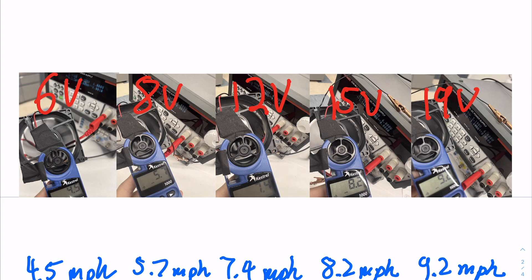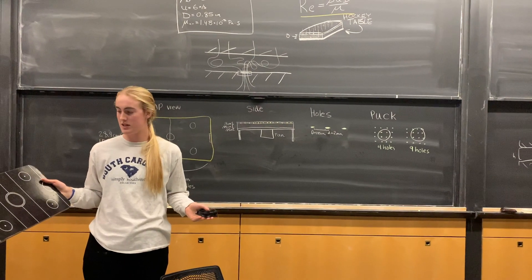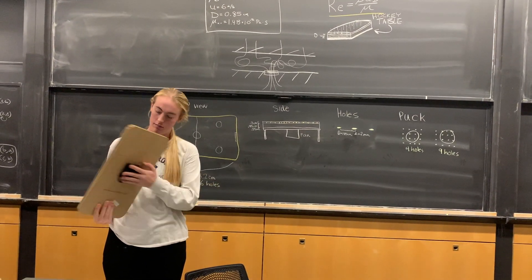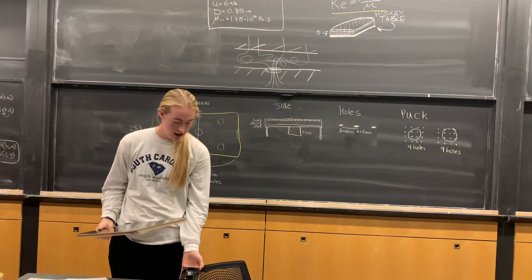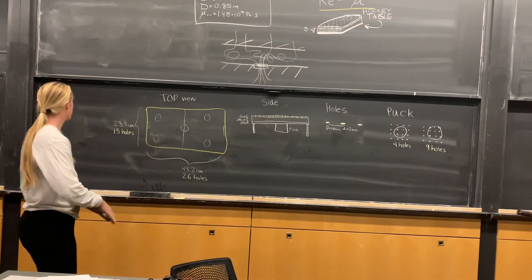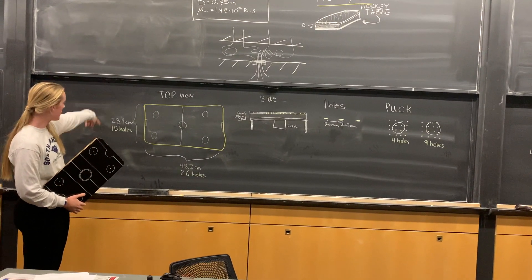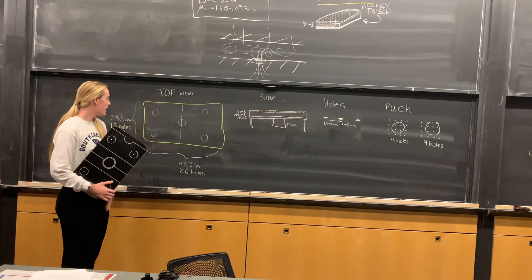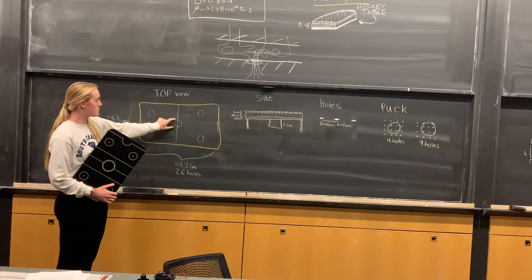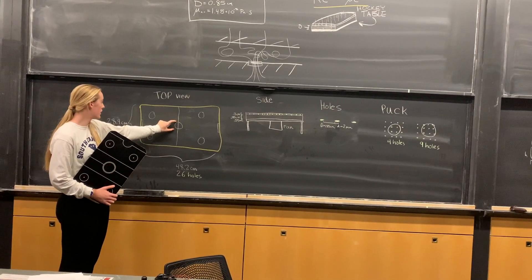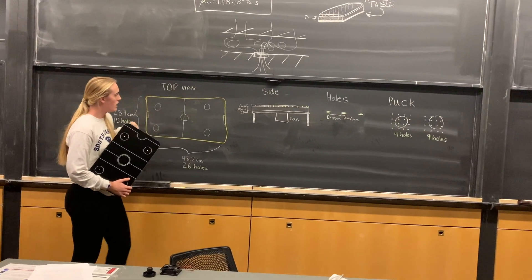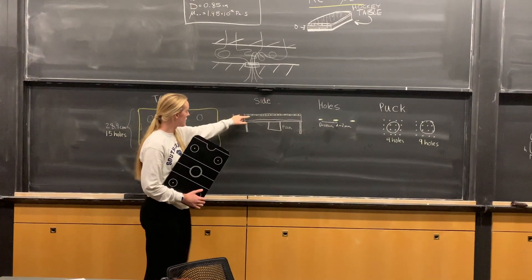The two basic components are the fan underneath and the board with holes in it. For the dimensions of the board, we have the top view at about 29 centimeters by 48, and 15 holes by 26. The fan in the middle is pretty small compared to the whole board, so there will be more losses at the edges and in the corners. Then we have the side view, right here is where the holes are.